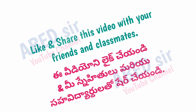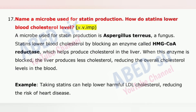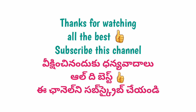Next important question is 17: Name a microbe used for statin production. How do statins lower blood cholesterol level? A microbe used for statin production is Aspergillus terreus, a fungus. Statins lower blood cholesterol by blocking an enzyme called HMG-CoA reductase, which helps produce cholesterol in the liver. When this enzyme is blocked, the liver produces less cholesterol, reducing the overall cholesterol levels in the blood. For example, taking statins can help lower harmful LDL cholesterol, reducing the risk of heart disease.